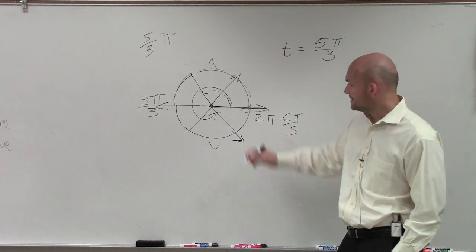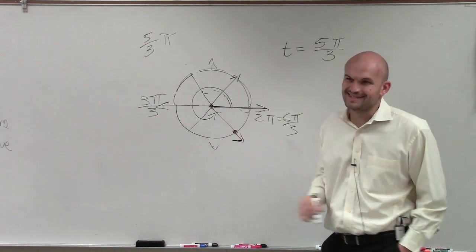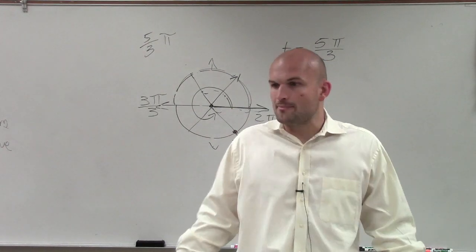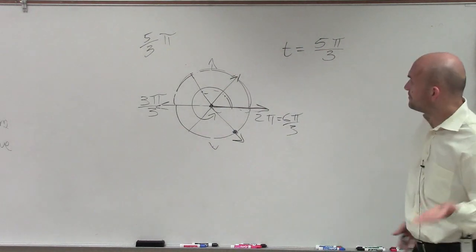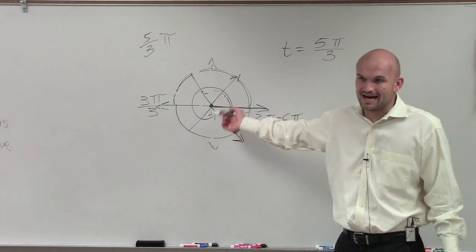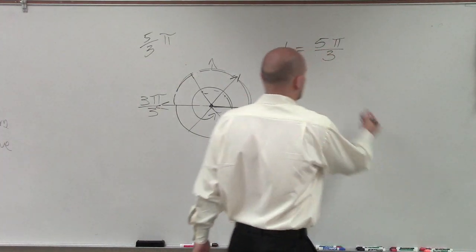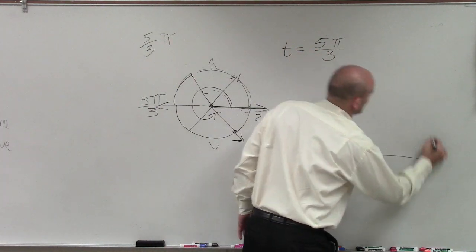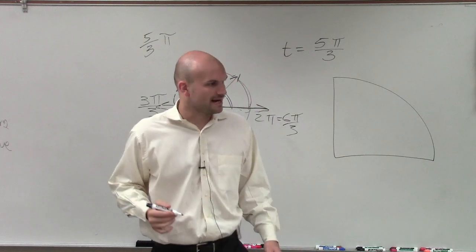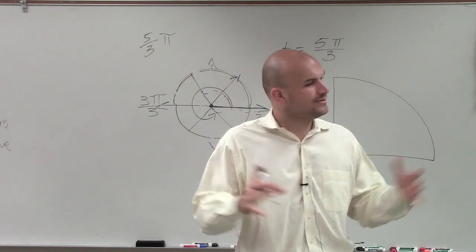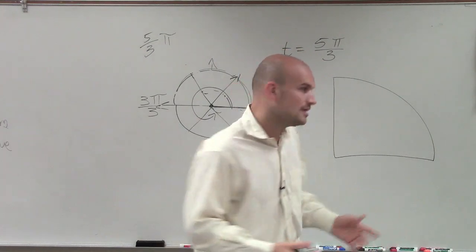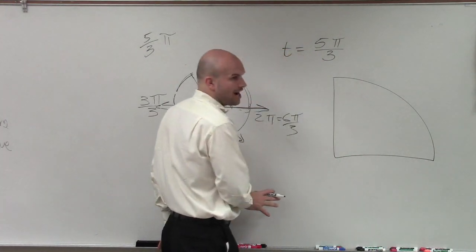So there's my angle. Now what I need to do is determine where is this point. What is that point on the unit circle? If I have an angle at 5 pi over 3, what point is that on the unit circle? So then I go back to the playlist on what is the unit circle.